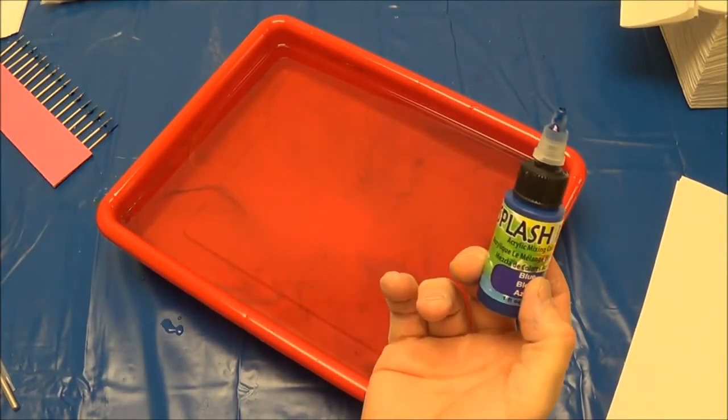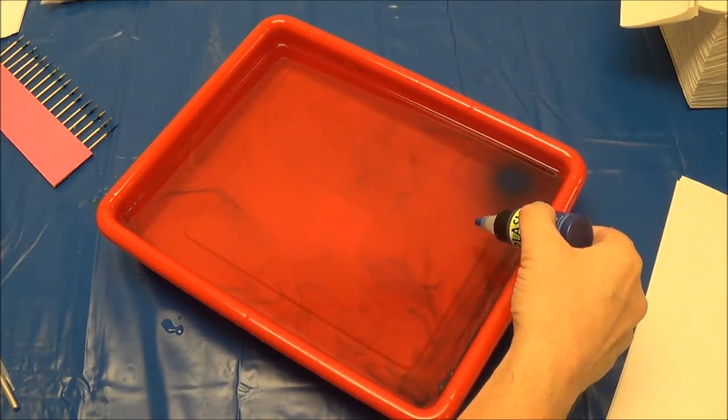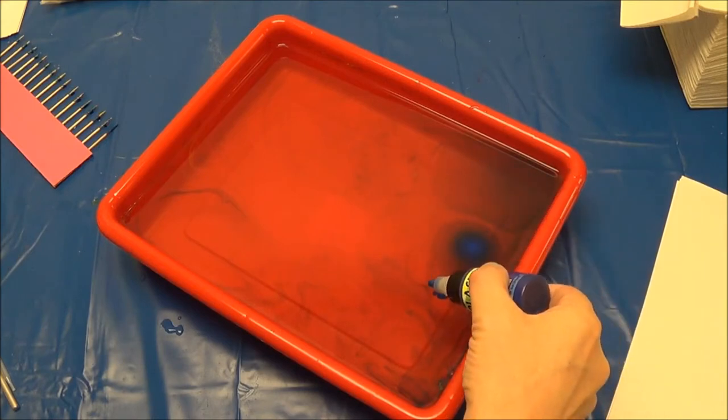Splash is great for marbling. Start with the first color and drop it onto the surface of the methicell. Notice how it expands.